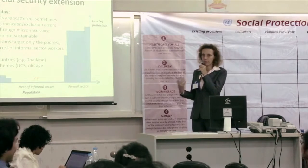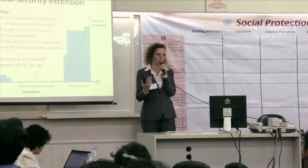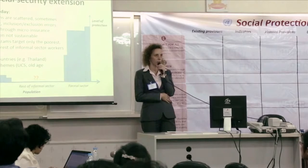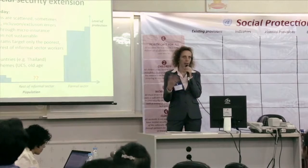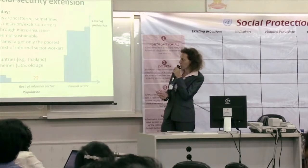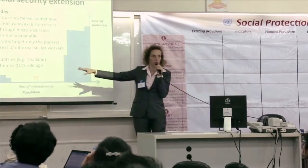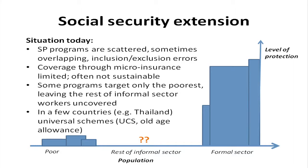Since 2001, many countries have explored different strategies. Today in ASEAN, the situation is very diverse. In many countries, programs exist that cover some parts of the informal sector, but the landscape is quite scattered. In Indonesia, for example, some programs target only the poorest of the informal sector, leaving the rest uncovered. Attempts to expand coverage through pilot programs to the rest of the informal sector have been very difficult and haven't worked well.